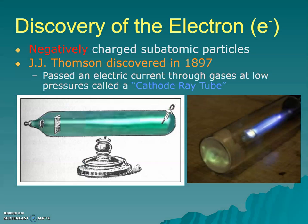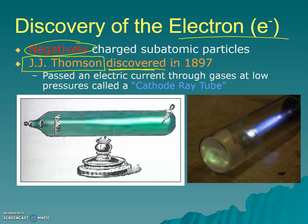So the first thing that happened was the discovery of the electron, and electrons are those negatively charged subatomic particles, you guys know that. And it was discovered by J.J. Thompson, and I emphasize discovered. They were not invented. He didn't make them. They existed. He figured them out.